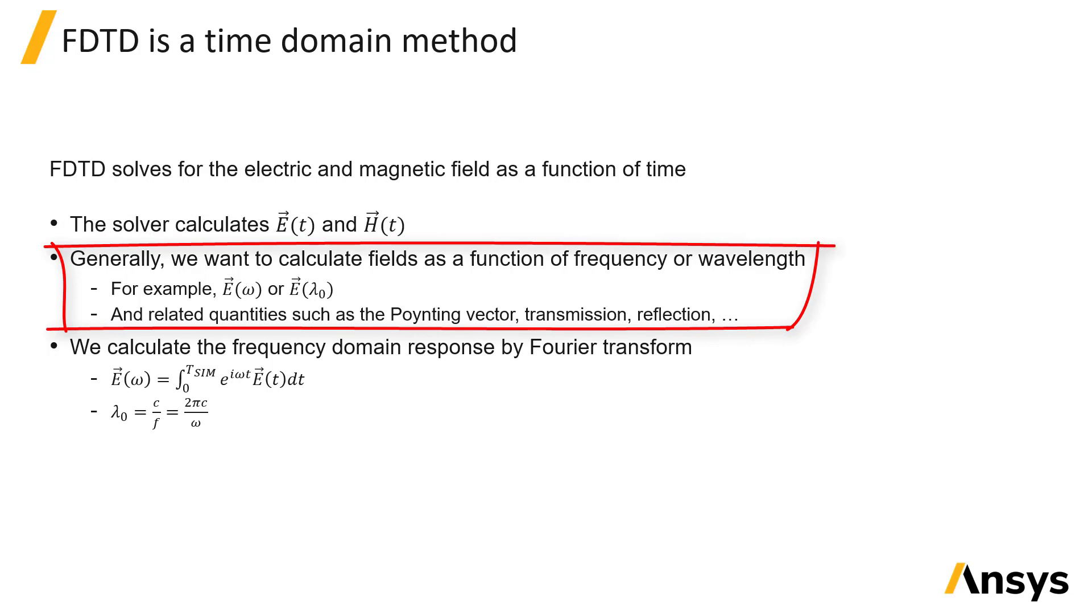Generally, we are interested in calculating fields as a function of frequency or, equivalently, wavelength. We are also interested in other quantities as a function of frequency or wavelength, such as the Poynting vector, transmission, reflection, absorption, scattering cross-sections, and so on.